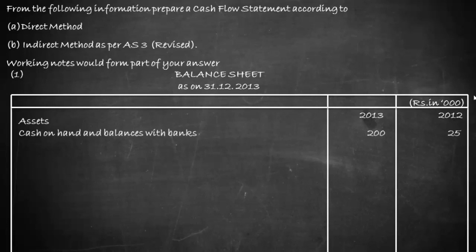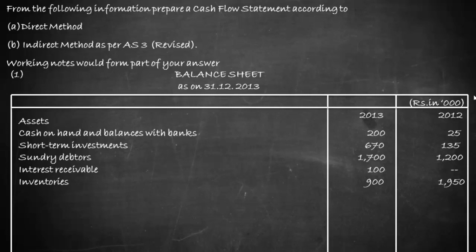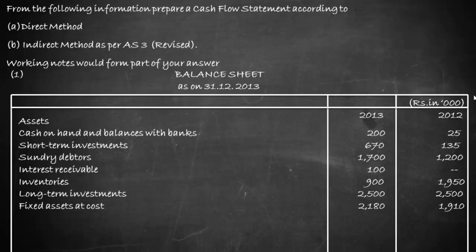Looking at assets: cash on hand moved from 25 in 2012 to 200 in 2013, an increase of 175. Short-term investments moved from 135 to 670. Sundry debtors moved from 1200 to 1700 — an increase, indicating an outflow. Interest receivable was nil in 2012 and 100 in 2013. Inventories decreased from 1950 to 900, representing an inflow. Long-term investments showed no movement, remaining at 2500 in both years.